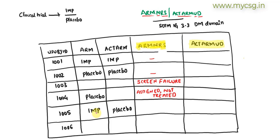For subject 1005, the planned ARM was IMP and actual ARM is placebo. Neither ARM nor actual ARM is null, so ARMNRS does not apply and should be left null.